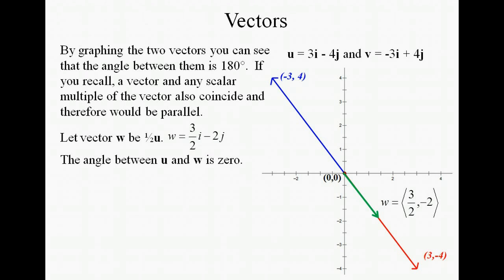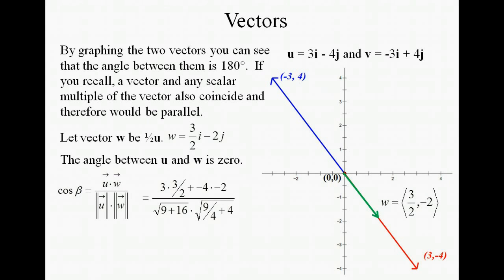Let's look at this example. We took one half of vector u to get vector w, which gave us the coordinates three halves and negative 2. Notice that it is right on the line 3, negative 4, and that the angle between the two vectors is 0. Looking at our cosine of beta formula and plugging in using vector w and vector u, we get 1. So if the cosine of the angle is equal to 1, then the angle must be 0, so these two are parallel. Anything that has an angle of 0 or 180 between the vectors is considered to be parallel.